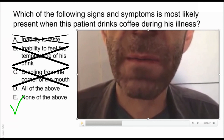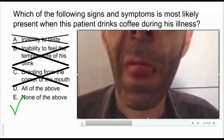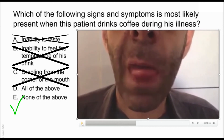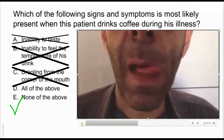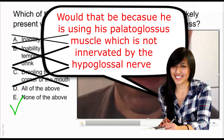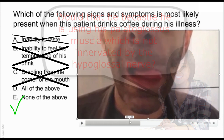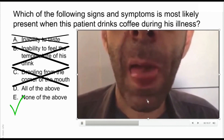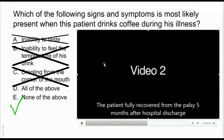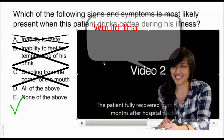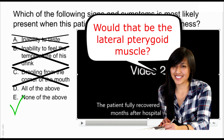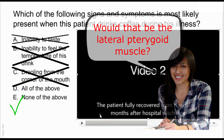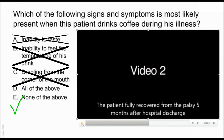Now look at this patient in the continuation of the video. How does it look like he is moving his tongue from side to side? If you look closely, he is actually not moving his tongue — look at what he is moving. He is moving his mandible in a side-to-side movement. The muscles responsible for side-to-side movement of the mandible are the medial pterygoid and lateral pterygoid muscles. So he is moving his mandible and giving us the false impression of tongue movement.